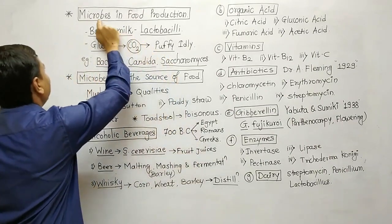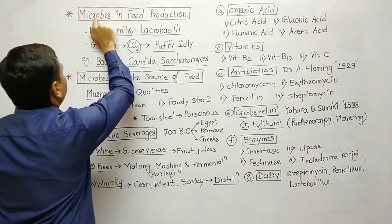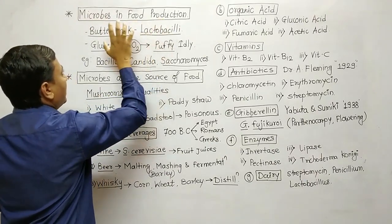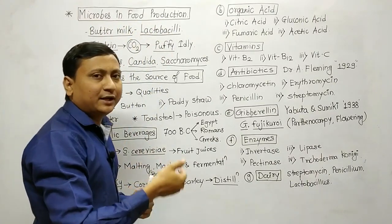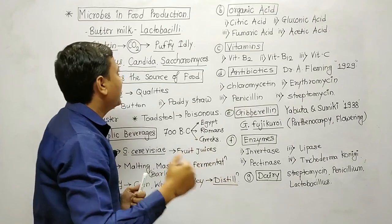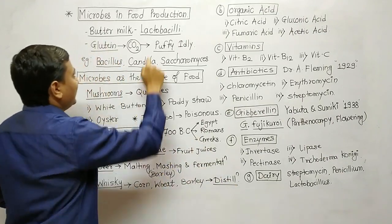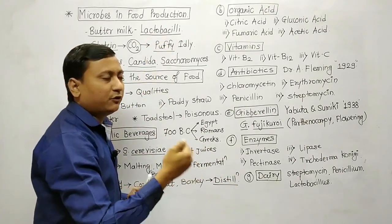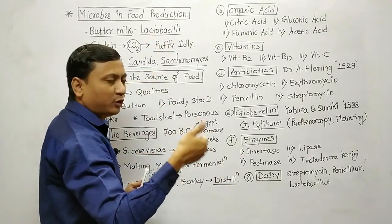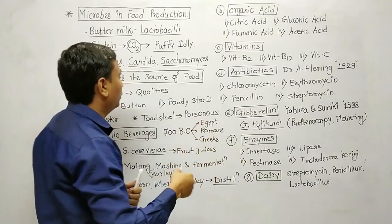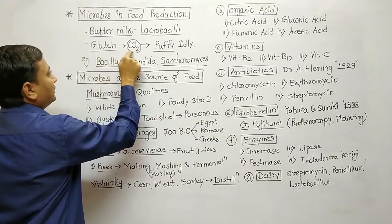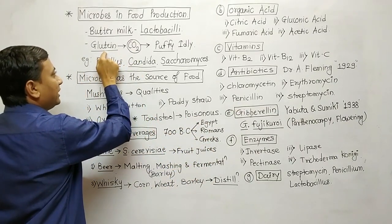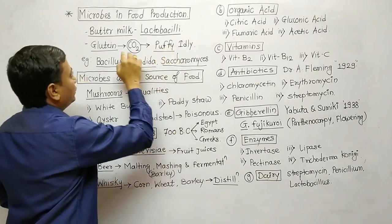First, we will study microbes in food production. Buttermilk is used to prepare idlis and dhokla. There will be Lactobacillus microorganisms that carry out the fermentation process. The CO2 which is trapped in the gluten makes the idli puffy.